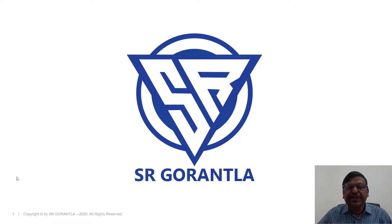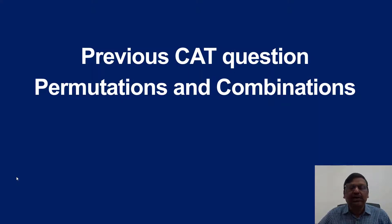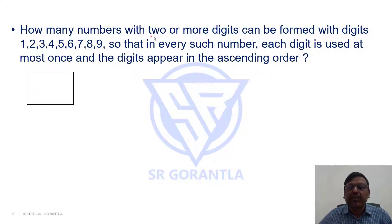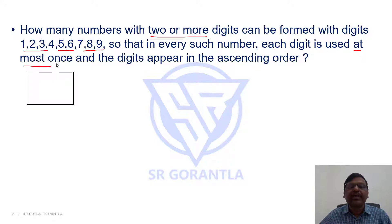Hello students, welcome to my channel. In this session we will discuss a previous CAT question on permutations and combinations. The question is: how many numbers with two or more digits can be formed with the digits 1, 2, 3, 4, 5, 6, 7, 8, 9, so that in every such number each digit is used at most once and the digits appear in ascending order?